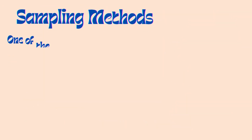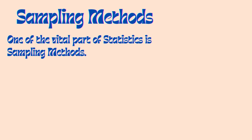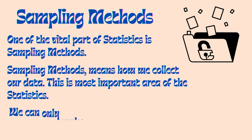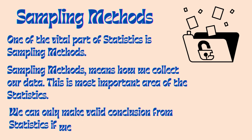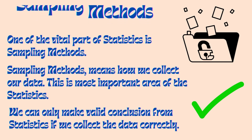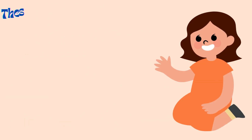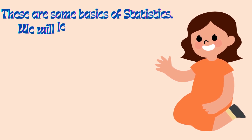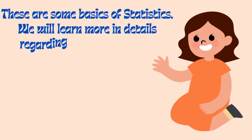One of the vital parts of statistics is sampling methods. Sampling methods refers to how we collect our data. This is the most important area of statistics because we can only make valid conclusions from stats if we collect the data correctly and in the right way.